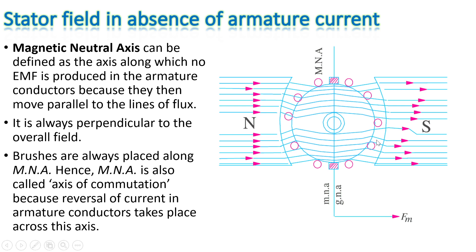Brushes are always placed along the magnetic neutral axis to collect current from the armature conductors. Hence, the magnetic neutral axis is also called the axis of commutation, because reversal of current in an armature conductor takes place at this point. For example, if the current in a conductor is negative (going inward), when it crosses the neutral axis it changes direction — because under the north pole it was influenced one way, and under the south pole it is influenced the other way. The current on one side of the magnetic neutral axis and the other side are always opposite, so current reversal takes place along the magnetic neutral axis where the current is zero.